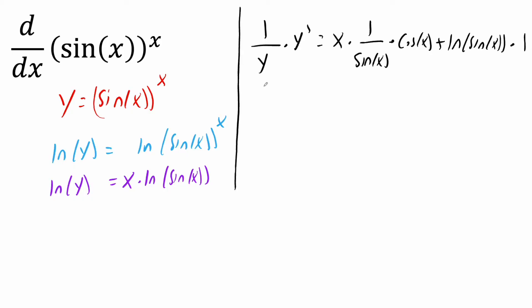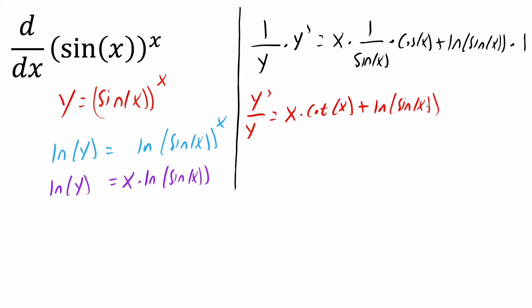At this point we can clean it up. We have y prime divided by y is equal to: cosine(x) over sine(x) is cotangent(x), so we have x times cotangent(x), plus ln(sine(x)).